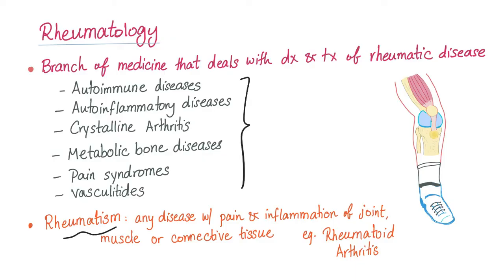Rheumatism — commonly used but not specific. It means any disease with pain and inflammation of a joint, muscle, or connective tissue. Usually they mean rheumatoid arthritis, but again, it's not specific. It's not a scientific name. Rheumatism is kind of how the general public refers to it.